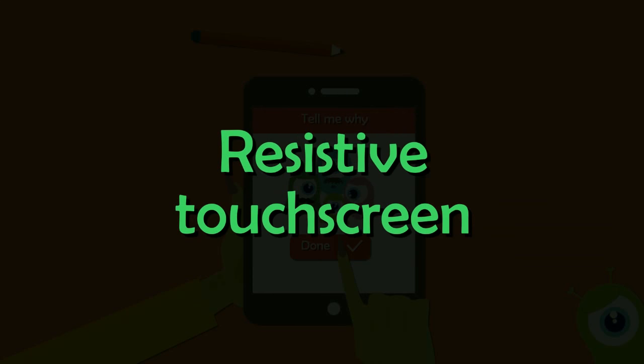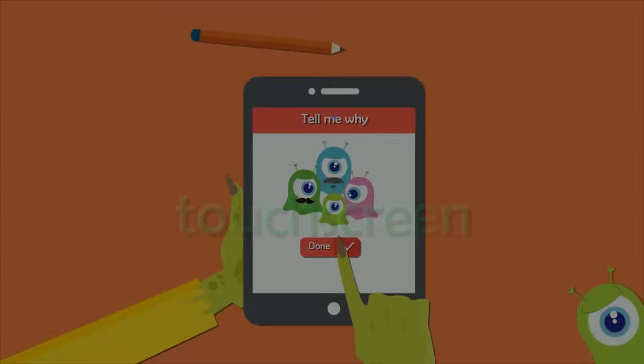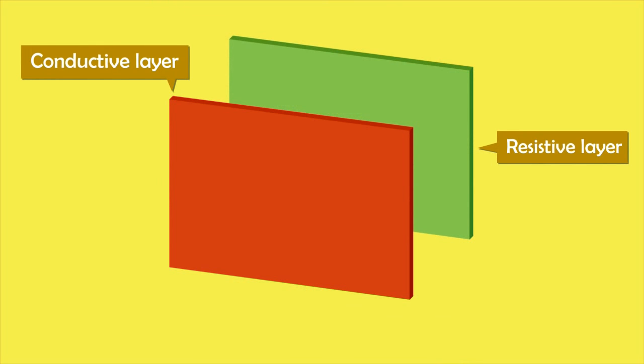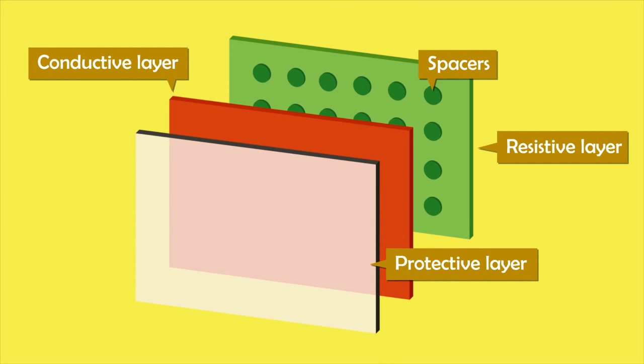One of the most basic systems, mostly used in ATMs, is the resistive touchscreen system. It consists of two electrically conductive layers — one of which is resistive and the other is the conductive layer. These two layers are separated by spacers which keep them apart until you touch it. A scratch-resistant layer on top completes the whole setup.